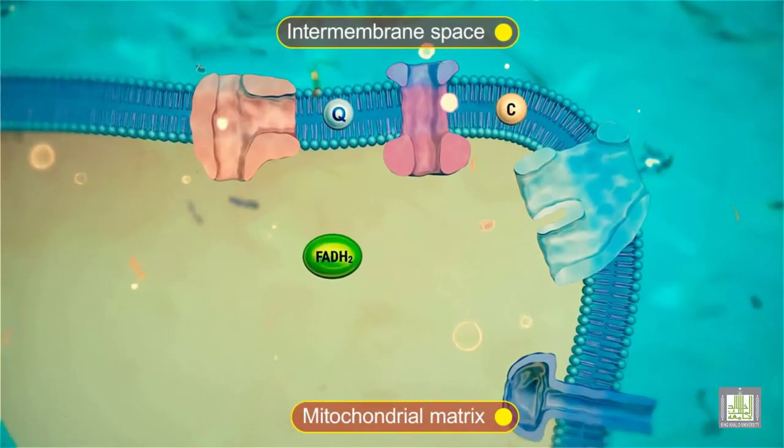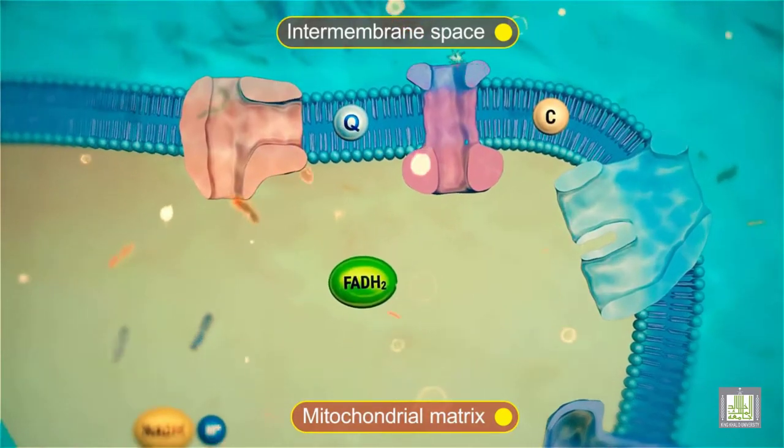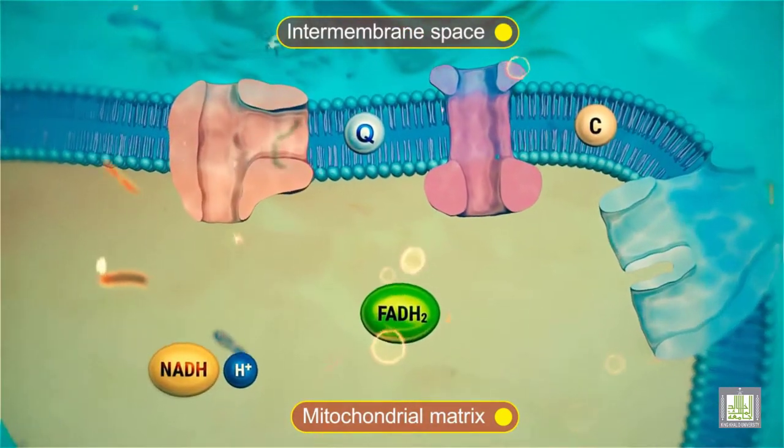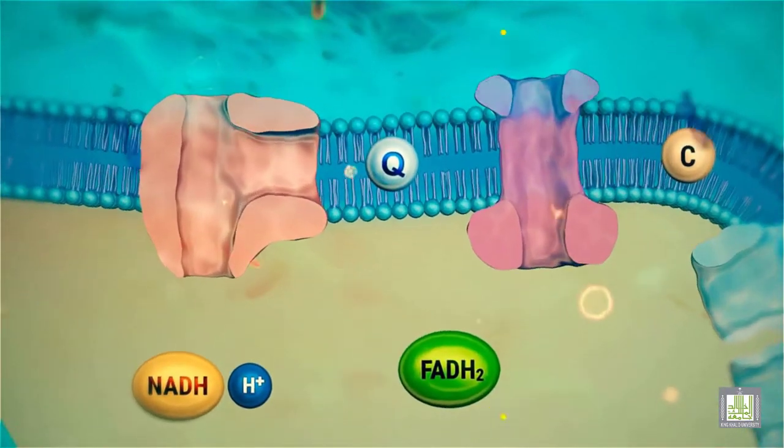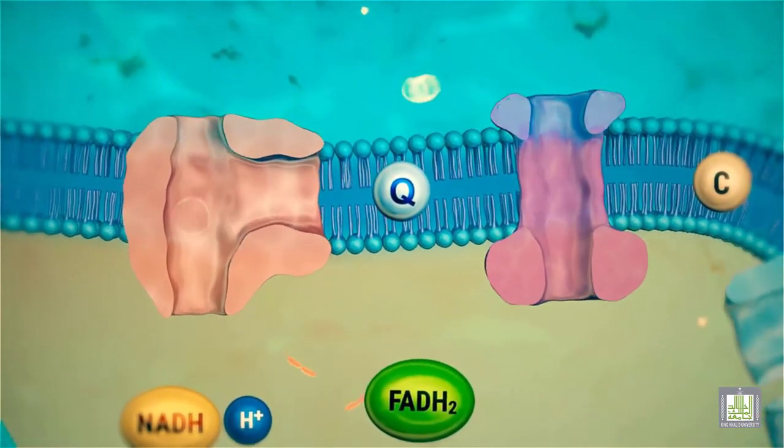When glucose is oxidized during glycolysis and the Krebs cycle, the coenzymes NAD plus and FAD are reduced to NADH plus H plus and FADH2.